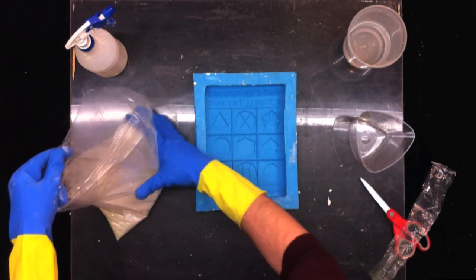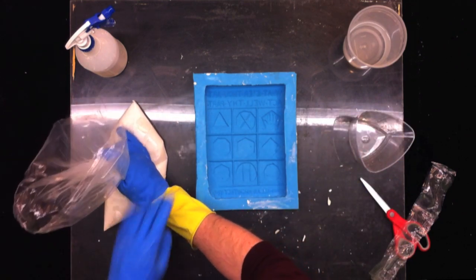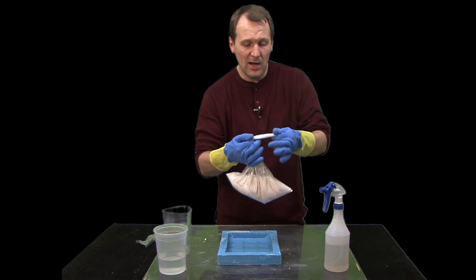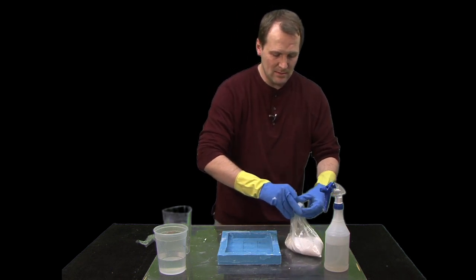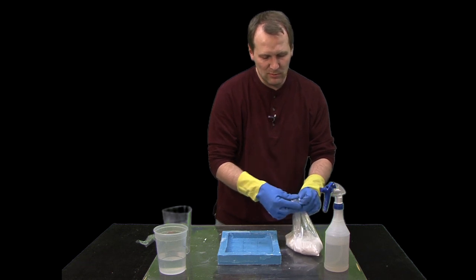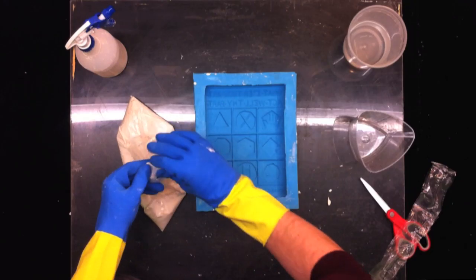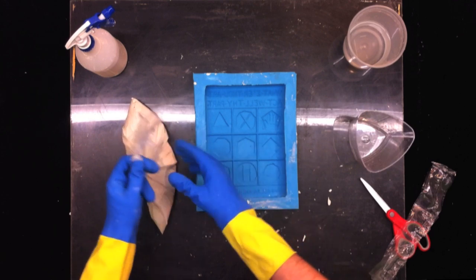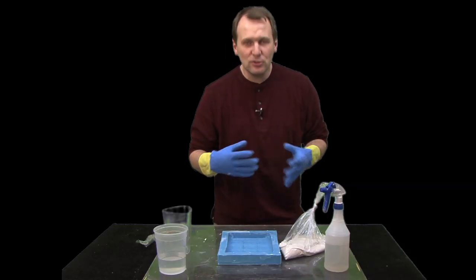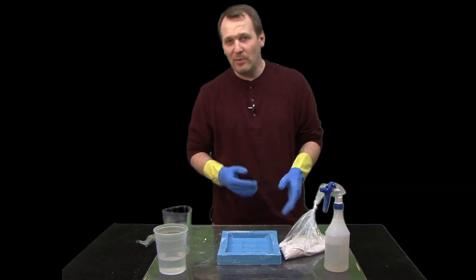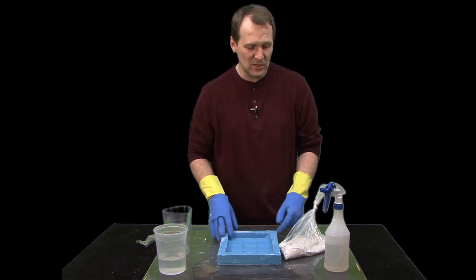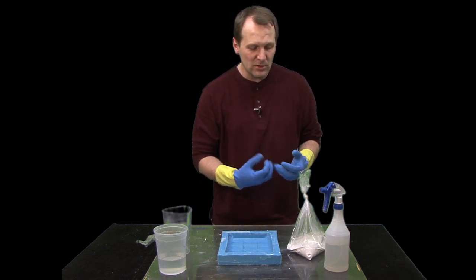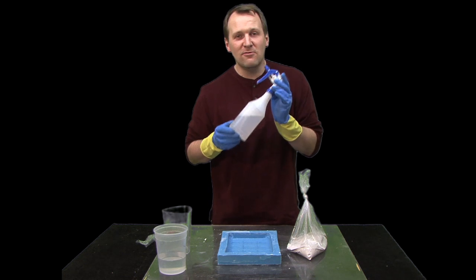And then what you want to do is pinch it and get all the air out and then tie a knot up high on the bag. I usually do this part without gloves. Okay, so we'll just let that soak, and usually when I'm casting I'll do several bags. I've got several molds of the exact same sculpture and so I will pour several bags and just let them sit, let the hydrostone and the water soak a little bit.